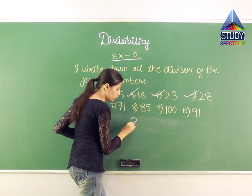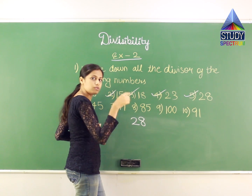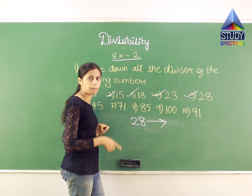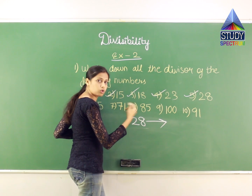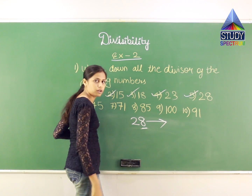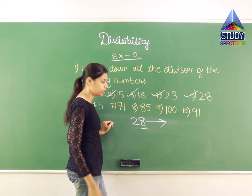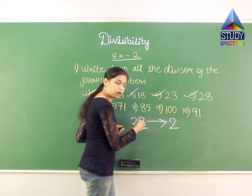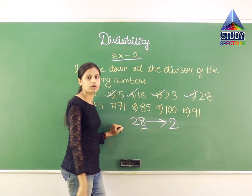Now we will move on to the fifth question, which has the number 28. We have to find all the possible divisors for it. First, we check 2: for 2 to be a divisor, I need an even number at the end. Do I have an even number at the end? Yes — 8 is even. So 2 is a divisor of 28.